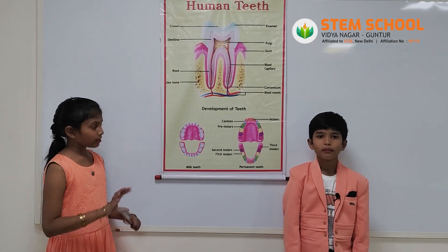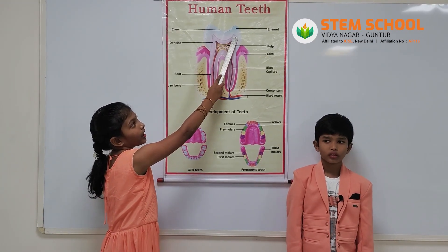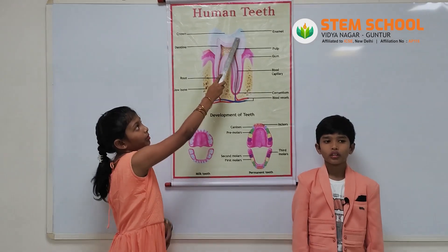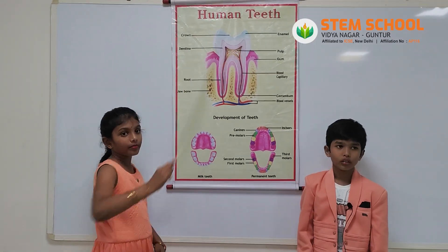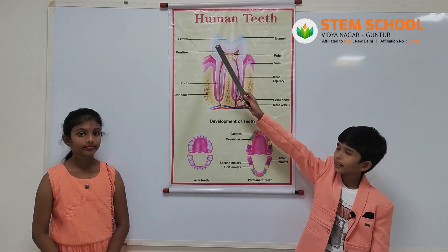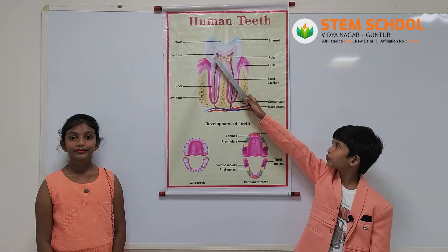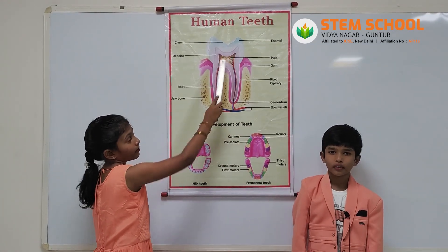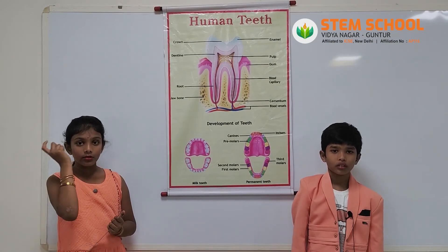Next is the structure of the teeth. The first layer of the tooth is enamel. Enamel is the outermost layer of the tooth and it is the hardest substance in the human body. The second layer is dentine. Dentine is a yellow colored substance and it is a bone-like material that supports the enamel. Next is pulp. The pulp provides nourishment to the tooth and sends signals to the brain.